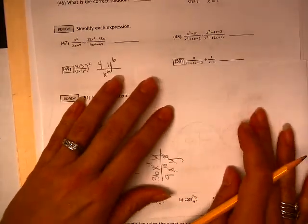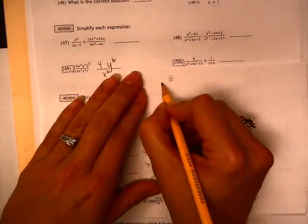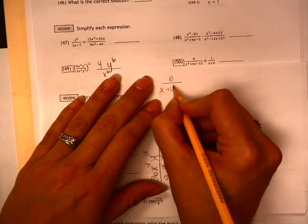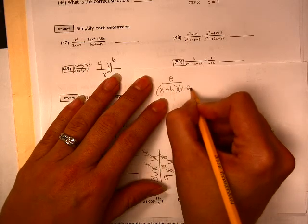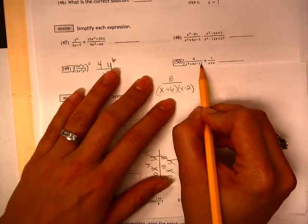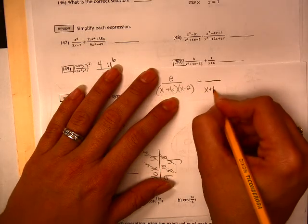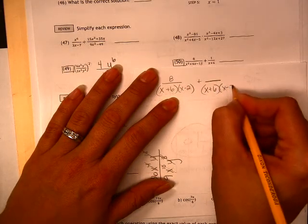Let's look at 50. 50 I need to add, which means I need to have a common denominator, which means I need to go ahead and factor this to see how close we are. And if I do x plus 6 and x minus 2, I will get my negative 12, and I'll also get my positive 4.